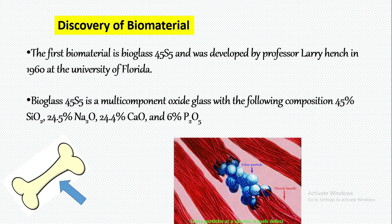We all know that our bones consist of 60 to 70% calcium and phosphate. This picture shows how the interfacial bonding of glass particle with the host tissue takes place.